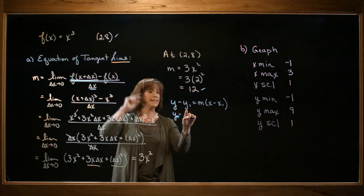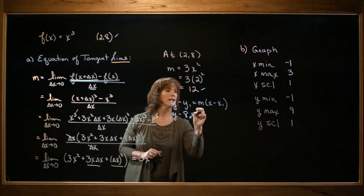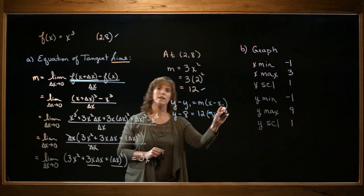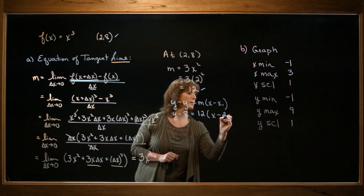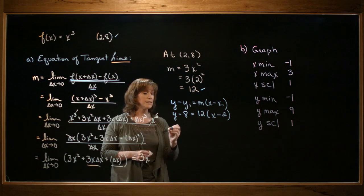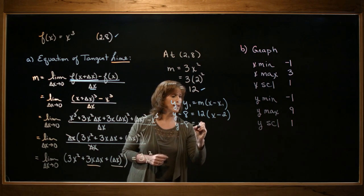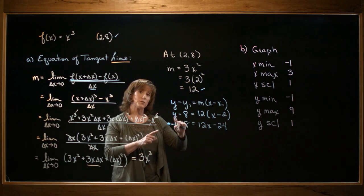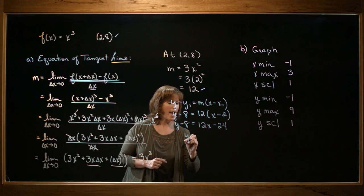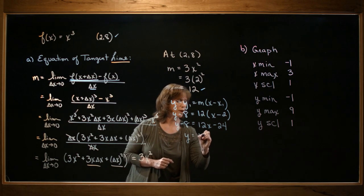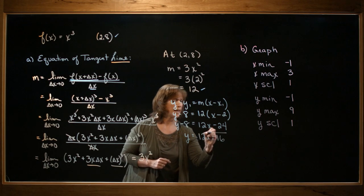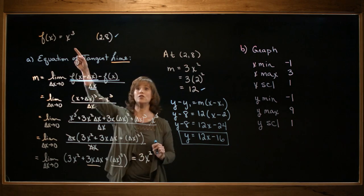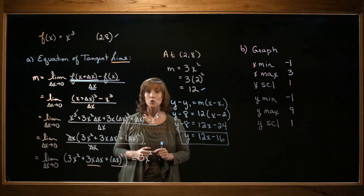The y-coordinate of my given point is 8, so I'll plug in an 8. The slope of my tangent line, that's the 12. And the x-coordinate of my given point is 2. With a little simplifying, I have y minus 8 equals 12x minus 24. And I'm going to solve for y, so I'm going to add 8 to both sides. And I'm left with y equals 12x minus 16. And that's the equation of the tangent line to the curve x cubed passing through the point (2,8).